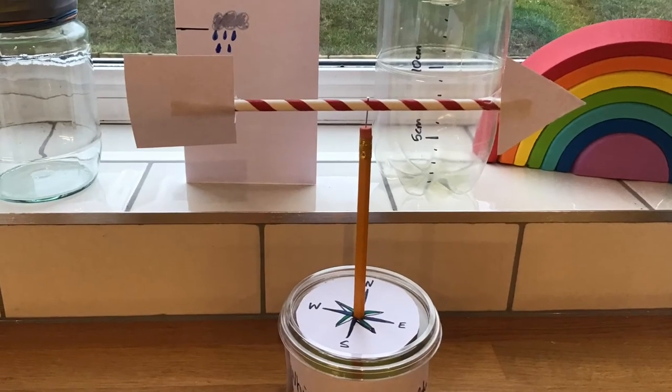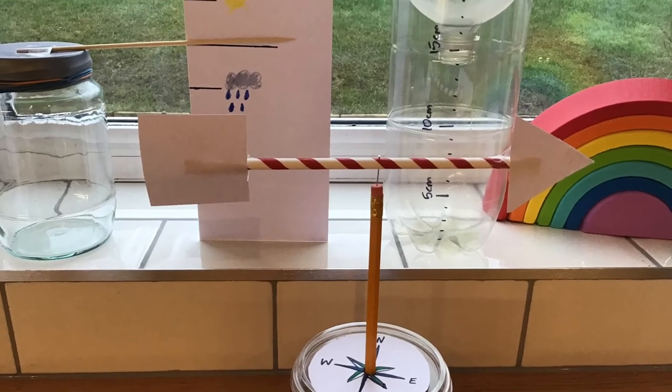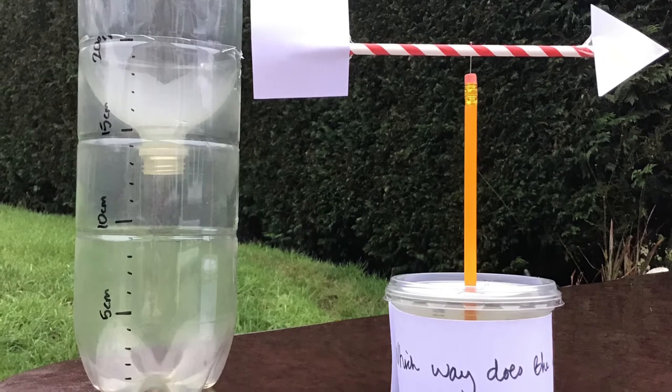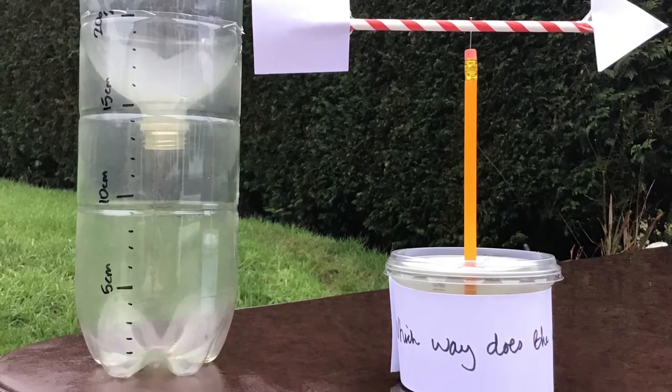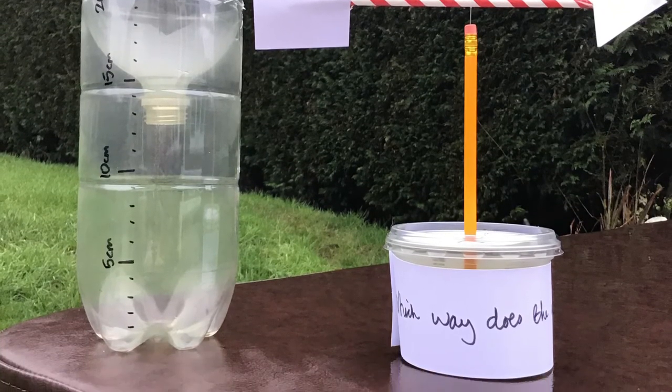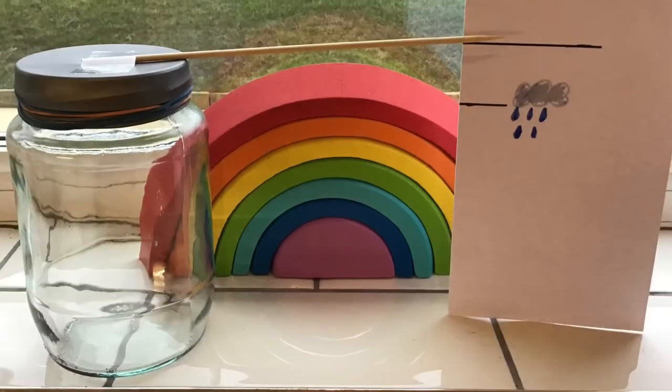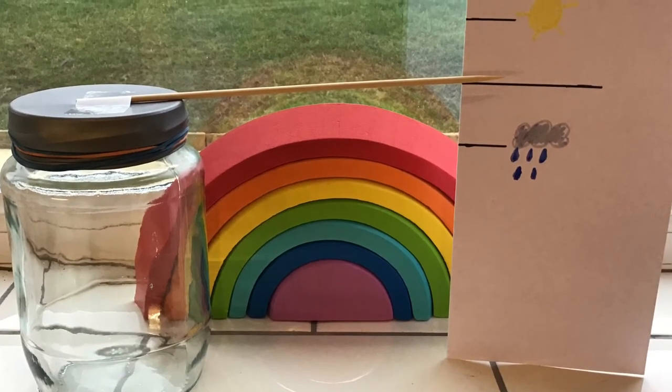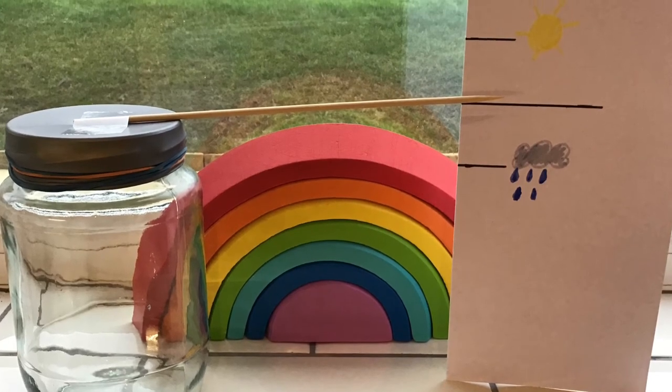Well done, you've now completed your weather station. We can now move our rain gauge and our weather vane outside ready to measure rainfall and wind direction. Your barometer stays inside on your windowsill to give you an indication of whether it's going to be sunny or raining.